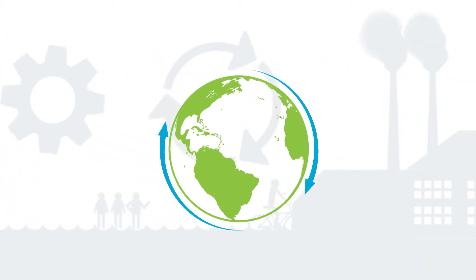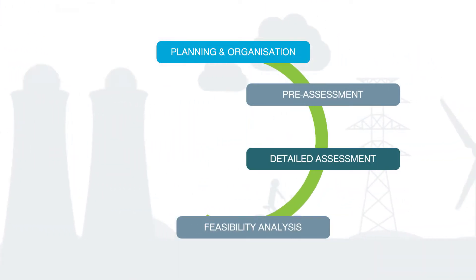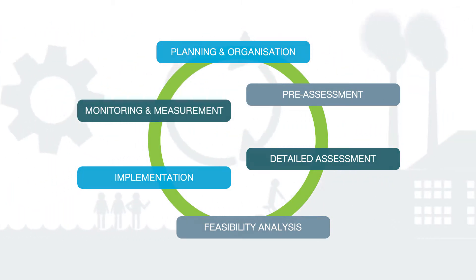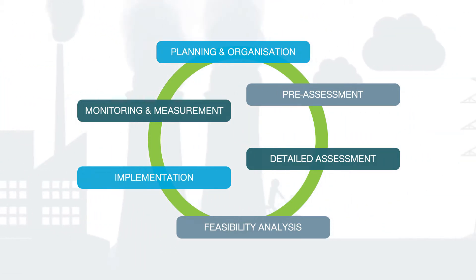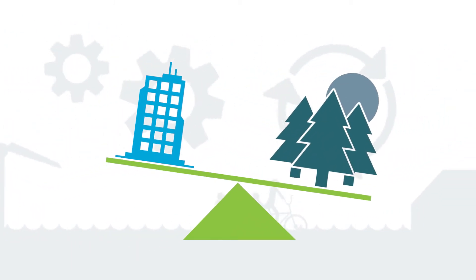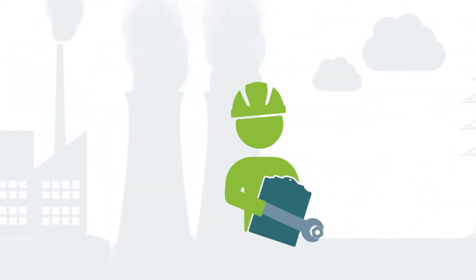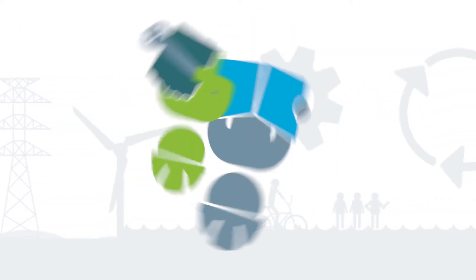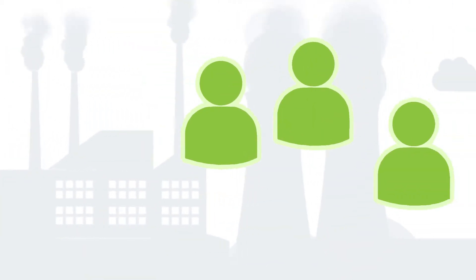RECP is a continuous and ongoing journey. The RECP implementation is a systematic, step-by-step process. Implementation involves balancing the business case with the environmental cause. Integration of RECP into an organisation works best using the learning-while-doing approach. Implementation shouldn't start with large investment options. And RECP is a team effort.